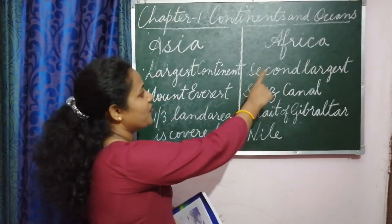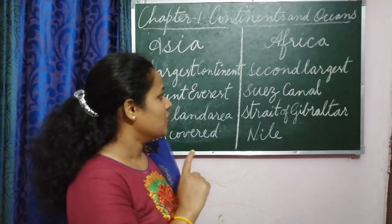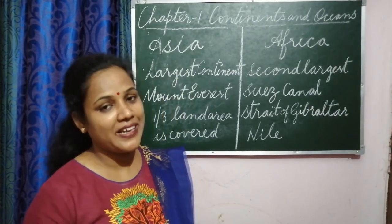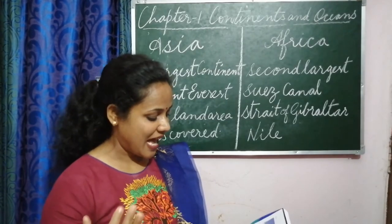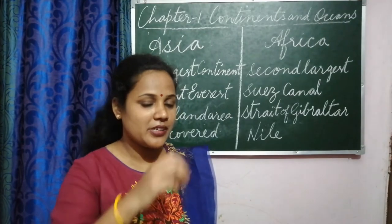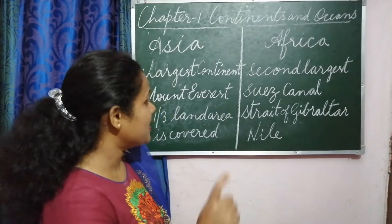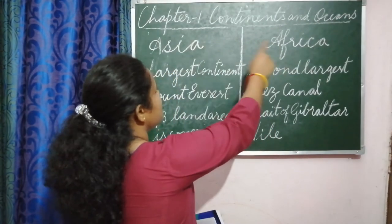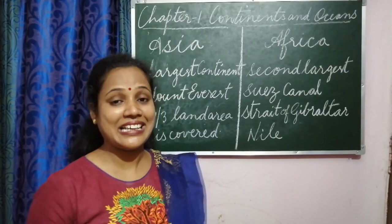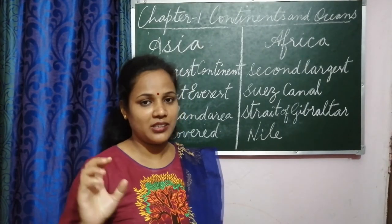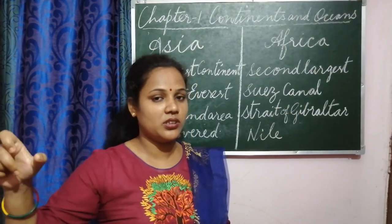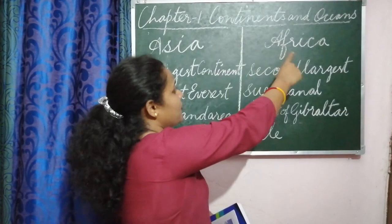Next we have the African continent. It is the second largest continent and is also surrounded by water bodies. In the north you have the Mediterranean Sea, in the south the Indian Ocean, and in the east the Atlantic Ocean. Africa and Asia are separated from each other by the Suez Canal. A canal is a narrow channel of water, and because of this channel, Asia and Africa are separated.